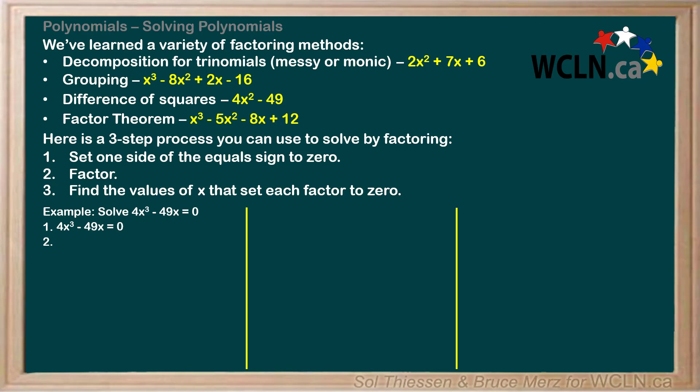Step 2 is to factor. Here, be sure to employ the golden rule of factoring. Pull out common factors as soon as possible. In this case, we can pull out a common factor of x from both terms, like so. Make sure to remember to write the common factor we pulled out next to the brackets.